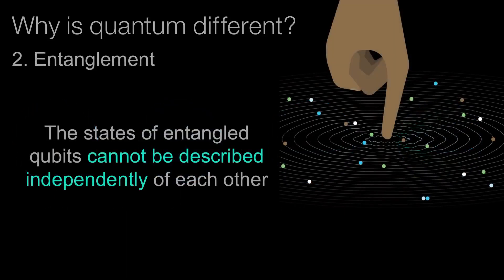The second property is entanglement. With two qubits entangled together, measuring the first qubit can tell me something about what will happen when I measure the second qubit. Entanglement is the second property that gives quantum information a really unique difference.